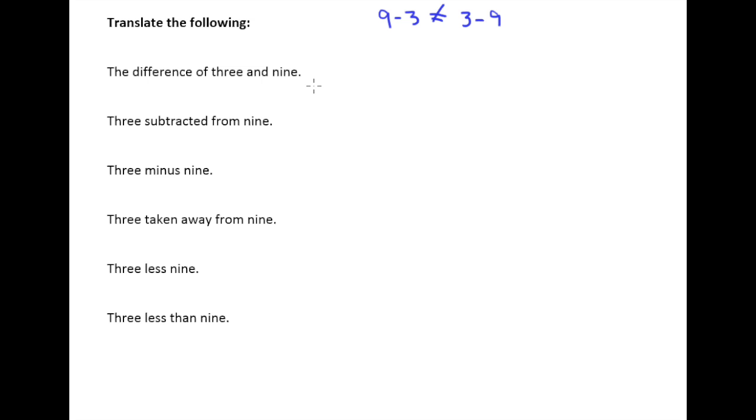So the first one we'll attack here is the difference of three and nine. Whenever you see the words "the difference of," that of course indicates subtraction. But the key here is that you put that subtraction in the order it's given. So "the difference of 3 and 9" means put the 3 first and put the 9 second.